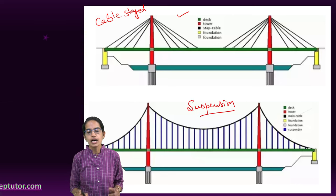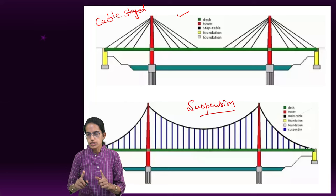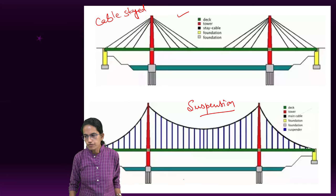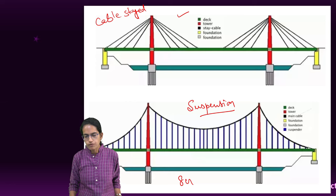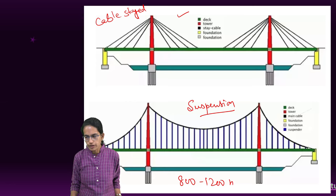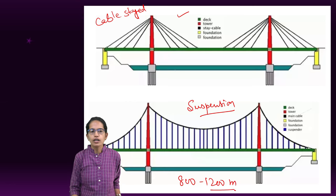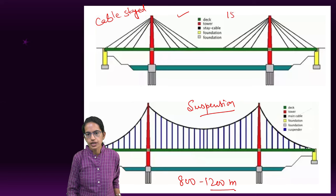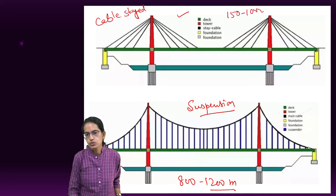The key difference occurs in the length. For the suspension bridge, the competitive span range could be from 800 to 1200 meters. For a cable-stayed bridge, it could vary from 150 to 1000 meters.